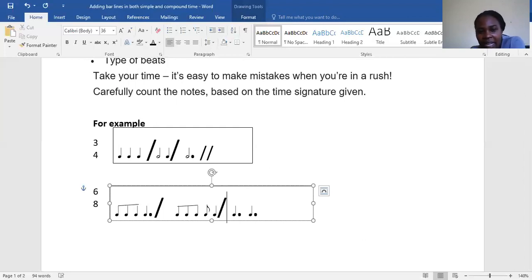A dotted crotchet has three quavers, so three plus three will add up to six. Remember to end your piece of music with the double bar line. These examples here are going to help you do the following exercise.